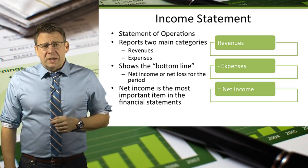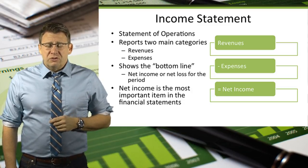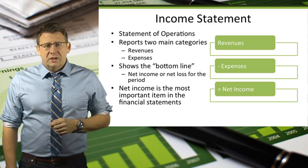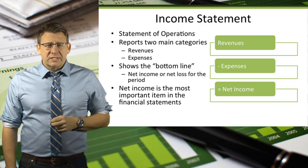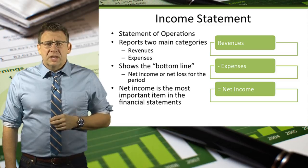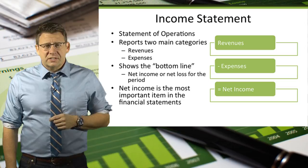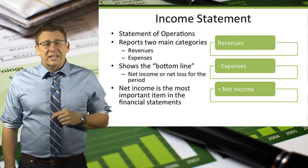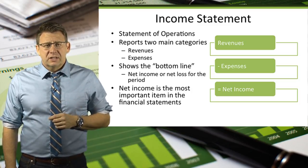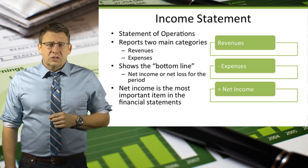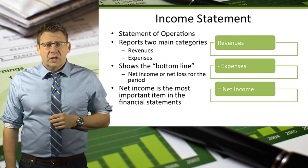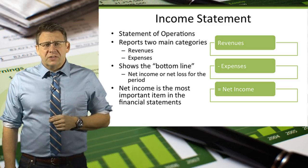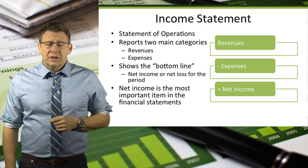The income statement, which is sometimes called a statement of operations or a P&L statement, reports how profitable a company is. On a simple income statement, there are just two categories of accounts: revenues and expenses. The difference between revenues and expenses is called net income. This occurs when a company has more revenues than expenses. Net loss occurs when a company has more expenses than revenue. Net income is one of the first things investors and creditors look for in the financial statements.